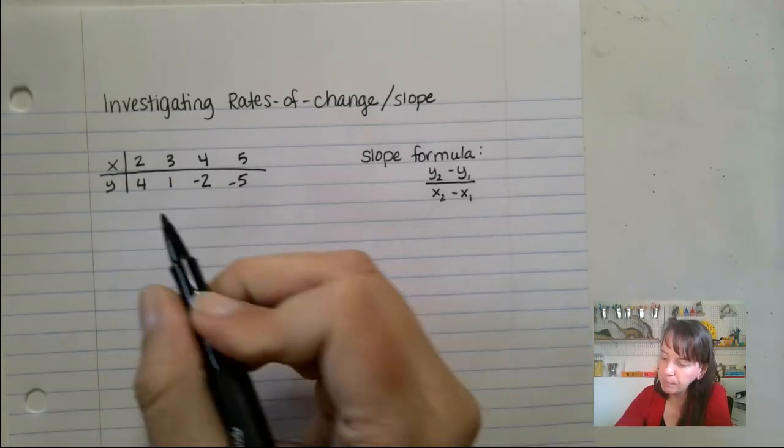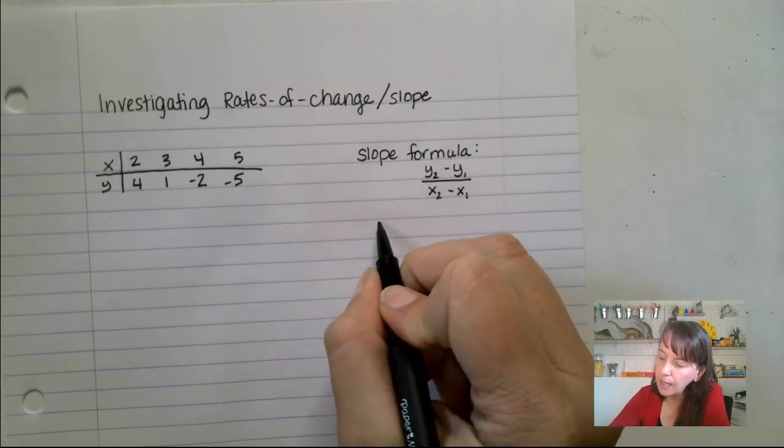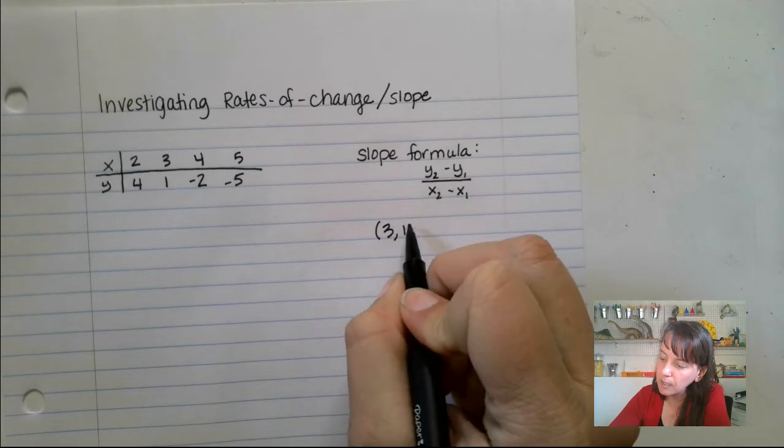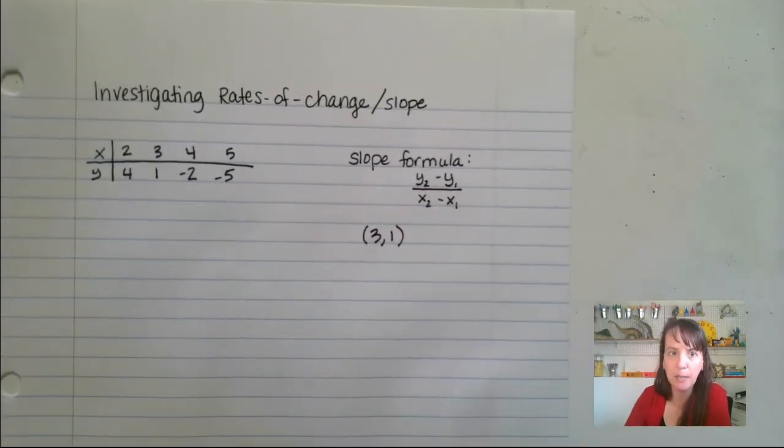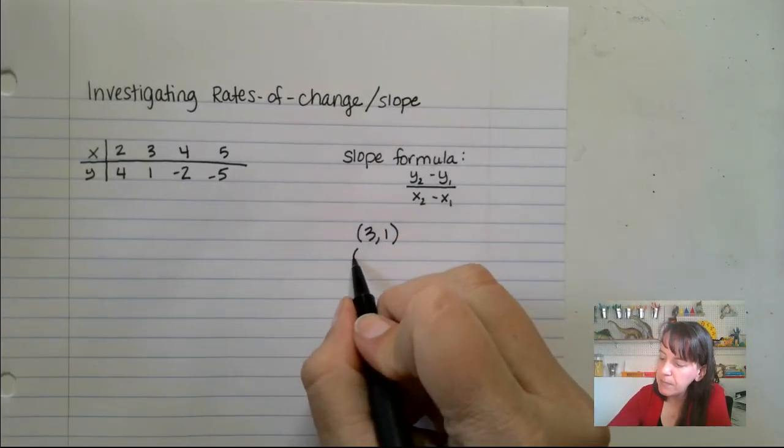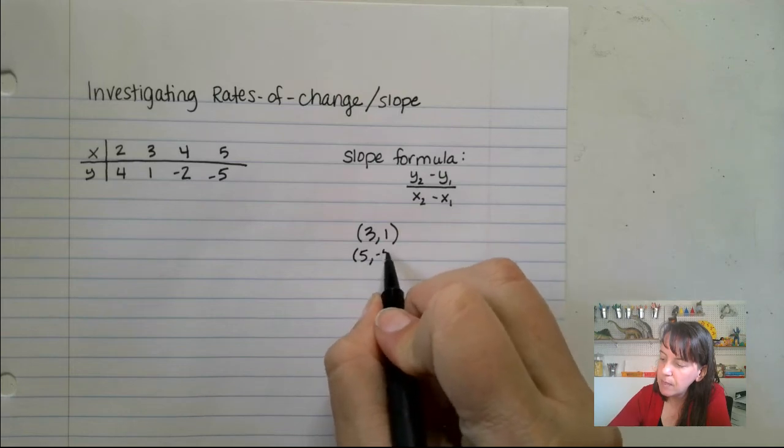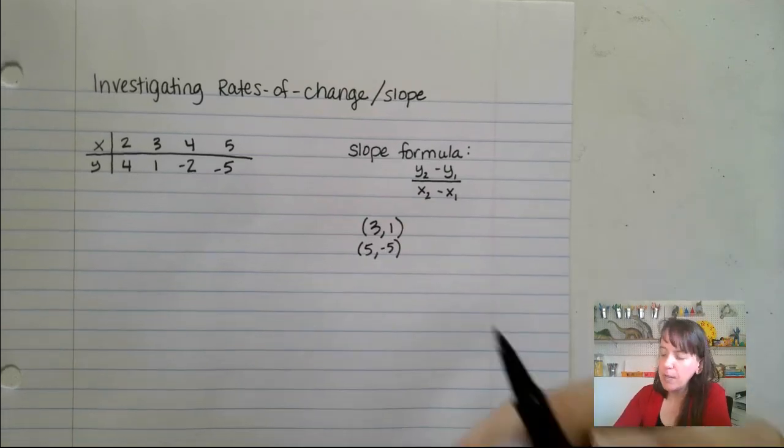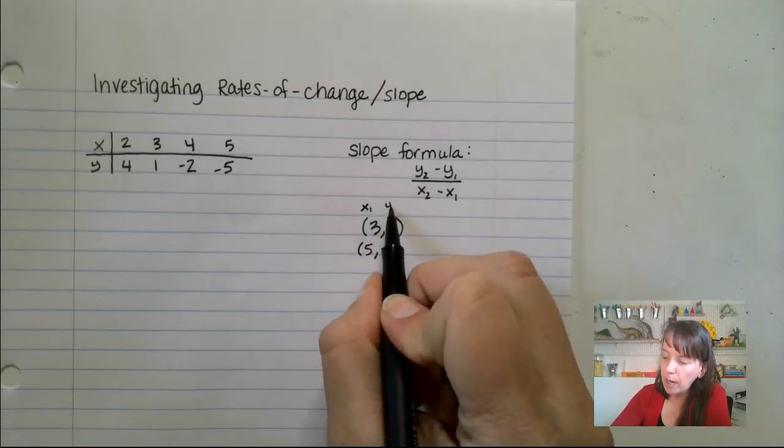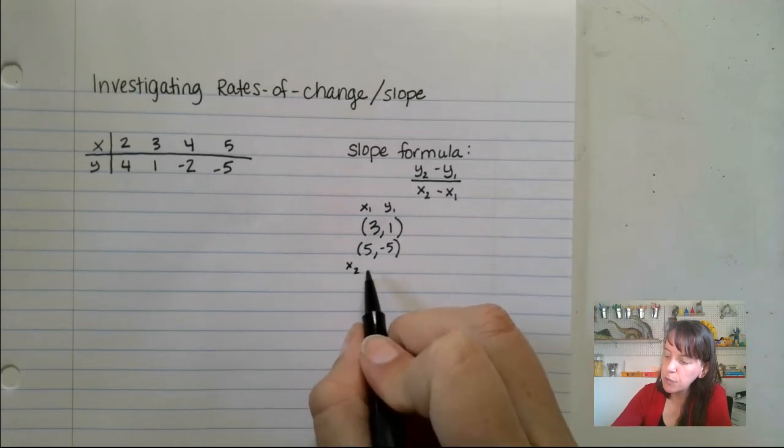I'm going to grab (3, 1), and I will put those here so that you can see it right next to the formula, and then (5, -5). Okay, so now what I'm going to do, this is my x1, y1. This is my x2, y2.